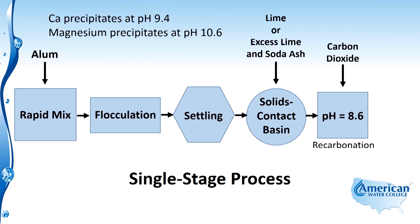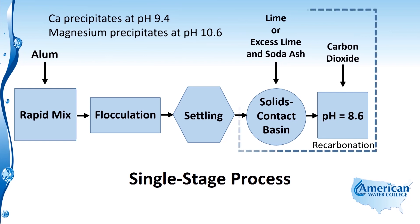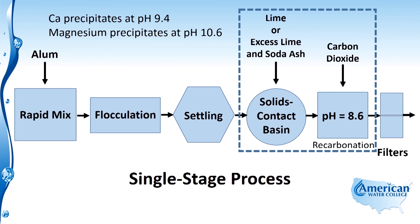Following the softening portion, we must bring the pH back down because high pH water causes problems with the disinfection process and will cause scaling in the distribution system. So we send it through a recarbonation process where carbon dioxide is added, bringing the pH down to around 8.6. From there, the recarbonated water flows to filters and then to disinfection and into the distribution system — completing the single stage softening process.